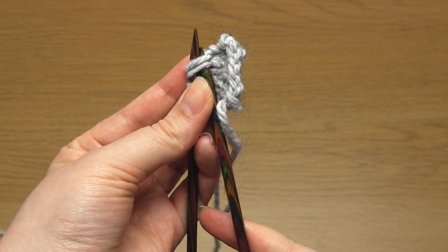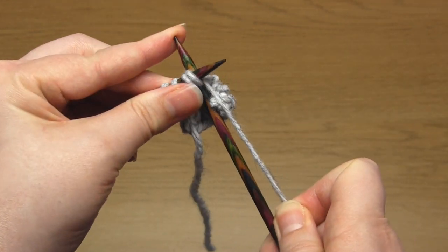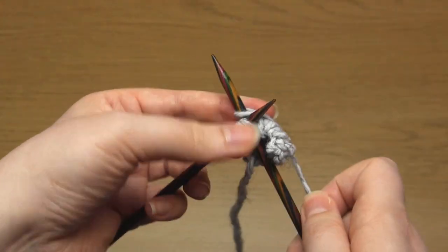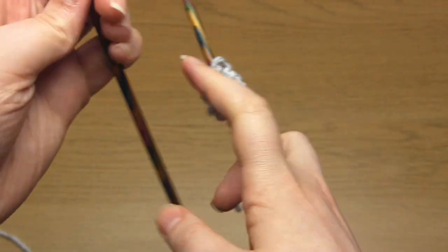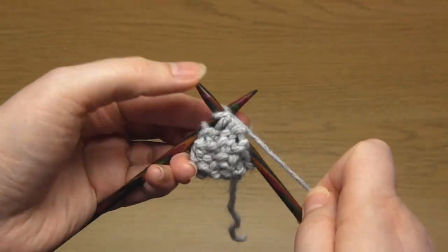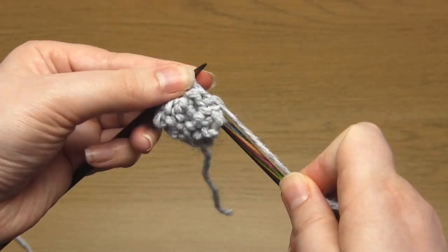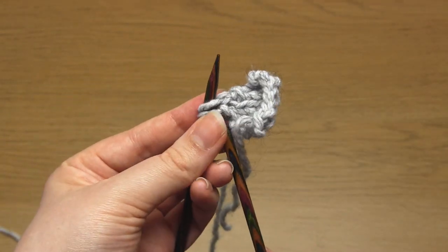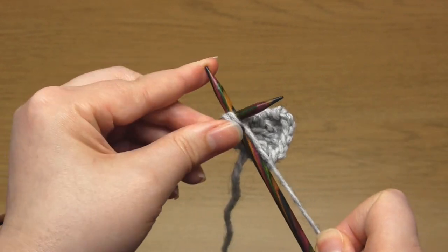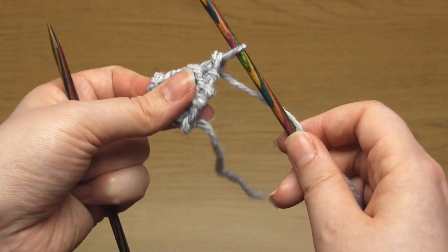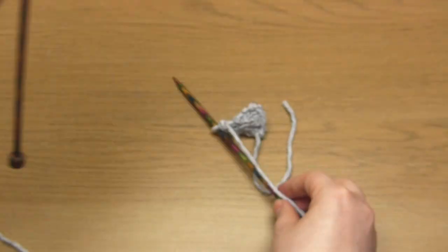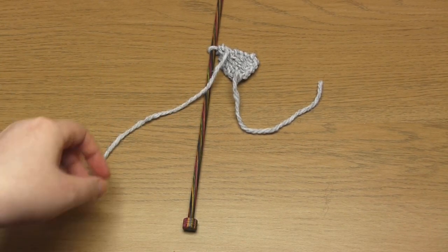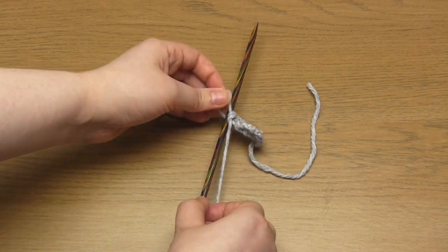And then for row 6 it's just k2tog and then another k2tog. For row 7 you purl 2 stitches. And for row 8 you do a k2tog. This will leave you with just 1 stitch. Cut the working yarn to leave you with a yarn tail at least 6 inches long. Then take this tail through the last stitch and tighten.